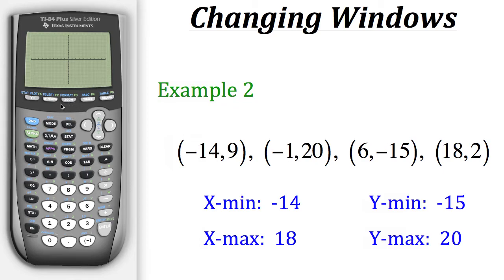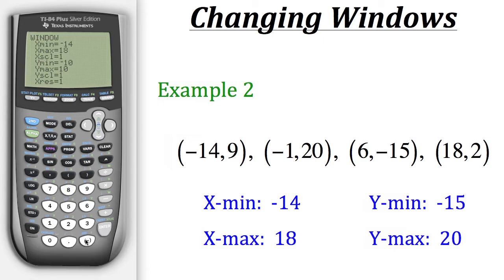You may notice none of the points are visible — that's because they're all outside the current window range. Since we already found our minimums and maximums, let's plug them in: x min is negative 14, x max is 18, y min is negative 15, and y max is 20.